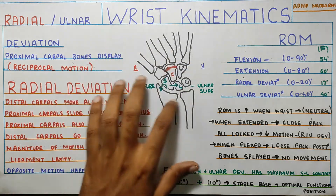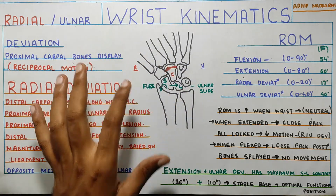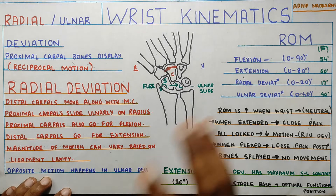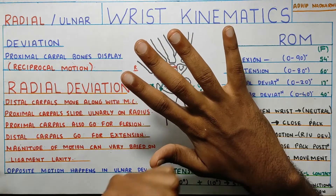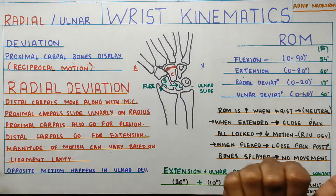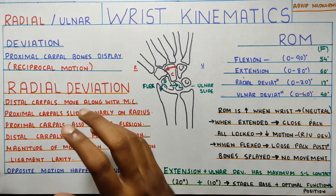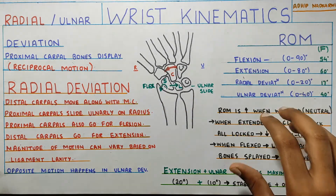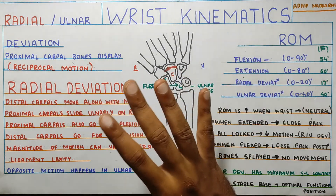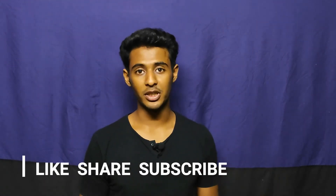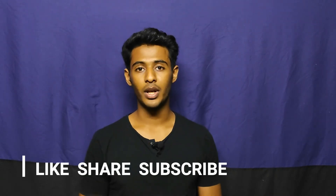To summarize: radial and ulnar deviation movement is complex but less variable, with variation depending mainly on ligament laxity. During radial deviation, distal carpals move toward the radial side while proximal carpals move away — that's the reciprocal motion. We also covered normal range of motion and how wrist flexion and extension affect radial and ulnar deviation range. That's all for today — if you liked the content, please like, share, and subscribe.